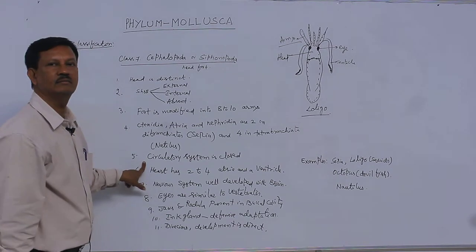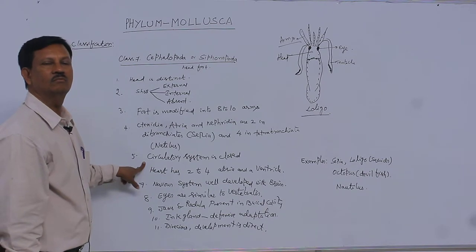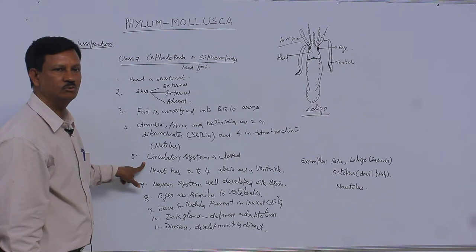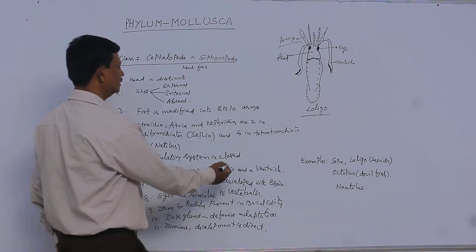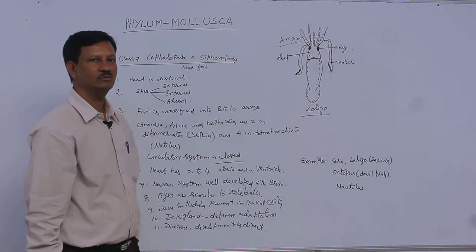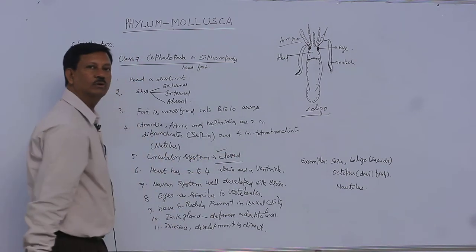The circulatory system is closed. It is a highly advanced character. Blood is present in the blood vessels. Such type of blood vessel system is known as a closed blood vessel system. In remaining classes, an open type of blood vessel system is present. This type of closed system is present in vertebrates.